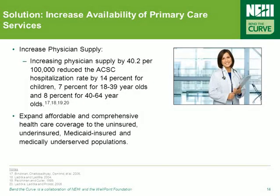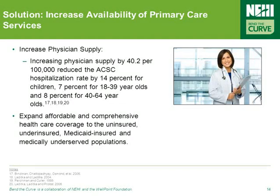Solutions to the issue of ambulatory care sensitive conditions must also emphasize the importance of primary care. Increasing physician supply by 40.2 physicians per 100,000 population has been shown to reduce the ambulatory care sensitive hospitalization rate by 14% for children, 7% for 18 to 39-year-olds, and 8% for 40 to 64-year-olds. Furthermore, policy actions should focus on expanding affordable and comprehensive health coverage to the uninsured, underinsured, Medicaid-insured, and medically underserved populations.